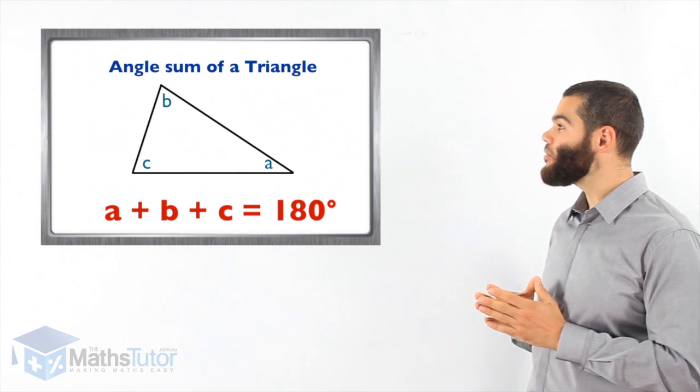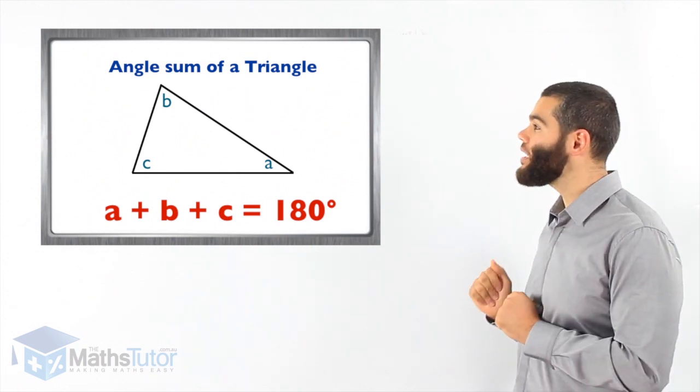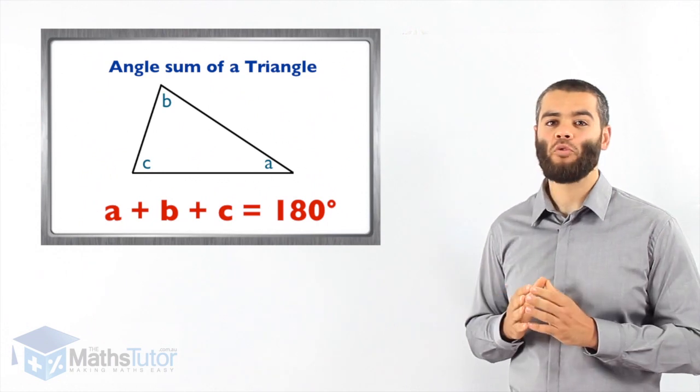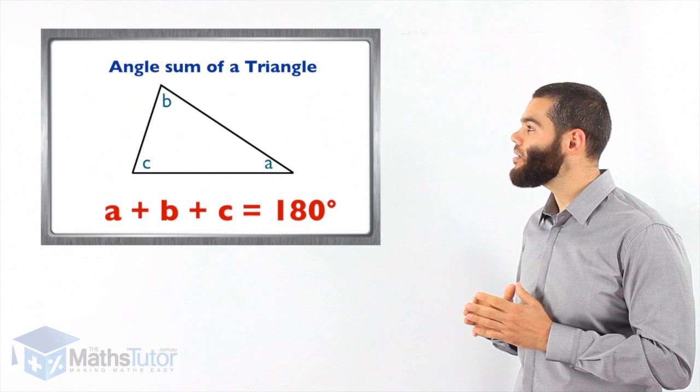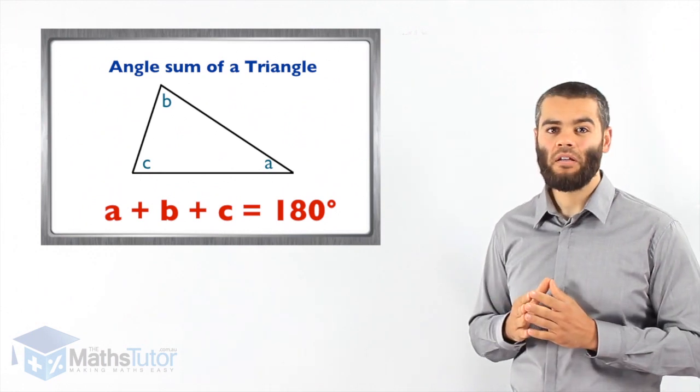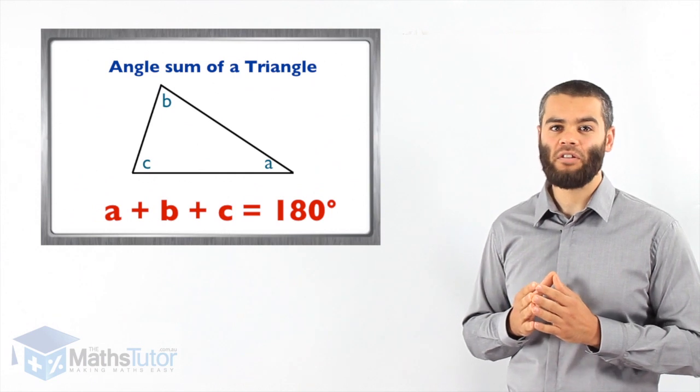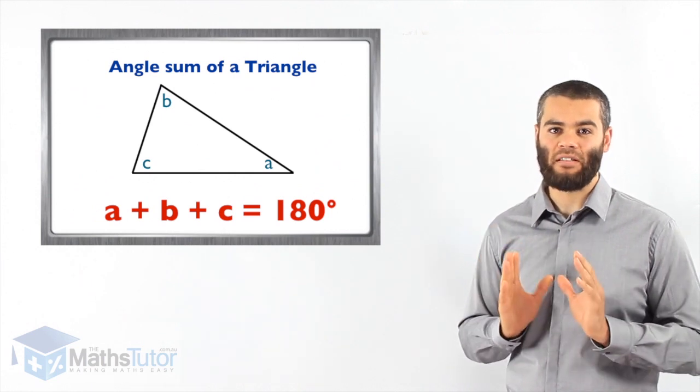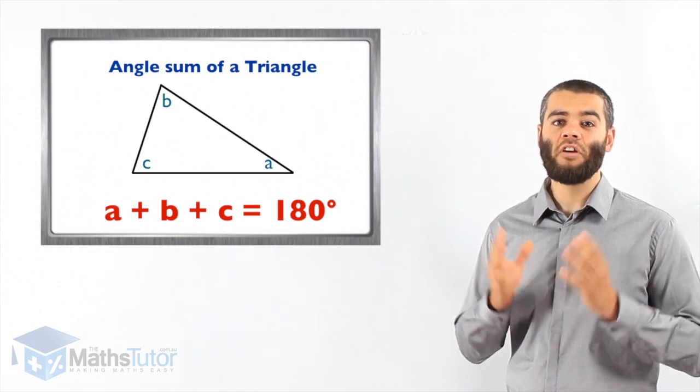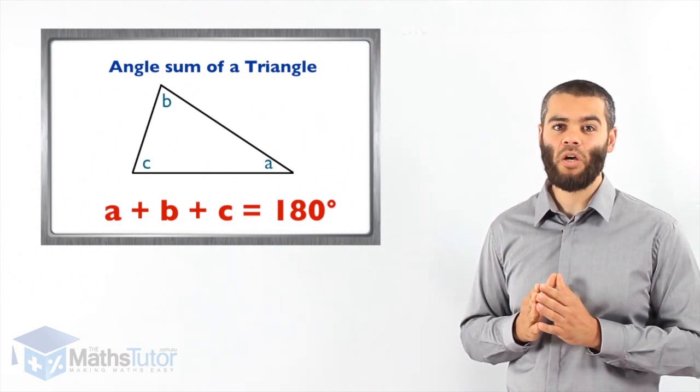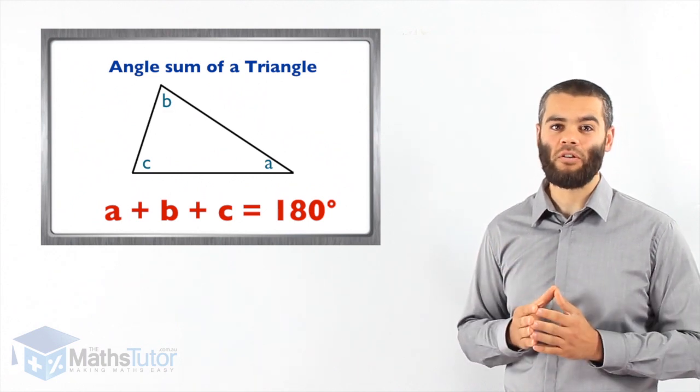Looking at this triangle, we have angle A, we have angle B, and we have angle C. All three angles, angle A plus angle B plus angle C, equal 180 degrees. Remember that. 180 degrees. This is going to help us with the next few examples we're going to do to find missing angles in a triangle.